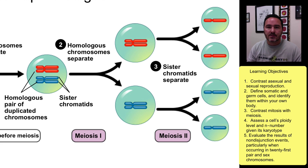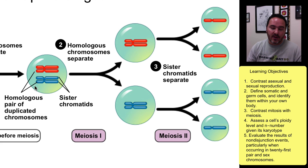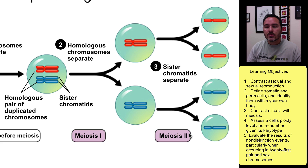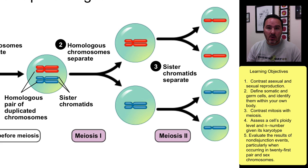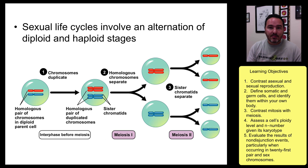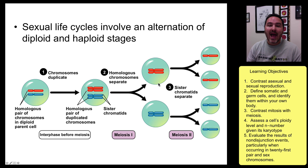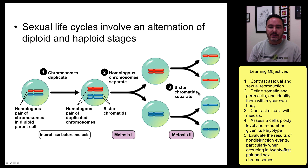That separation of homologous chromosomes never happened in mitosis. But in meiosis I, homologous chromosomes separate, and so now I have a haploid cell — I started with two chromosomes and now I only have one. Then in meiosis II, sister chromatids separate, which is the same as what was happening in mitosis, except in mitosis it was a diploid cell having sister chromatids separate, whereas in meiosis we have haploid cells having sister chromatids separate. We end up with haploid daughter cells, and these are the gametes — the eggs and the sperm.